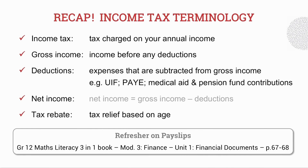Let's recap the income tax terminology that we have learnt so far. Income tax is the tax that is charged on your annual income. Then we looked at gross income, which is the income that you receive before any deductions. Deductions are expenses that are subtracted from your gross income. Typical examples include UIF, pay-as-you-earn, medical aid and pension fund contributions.